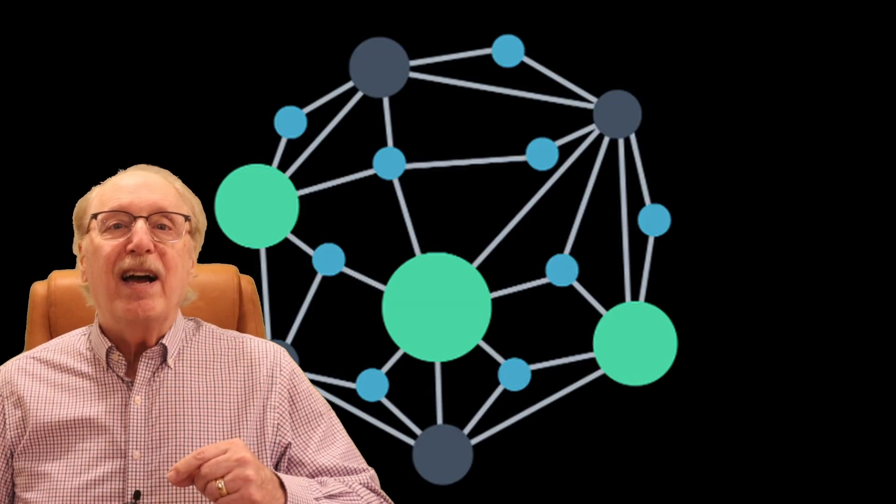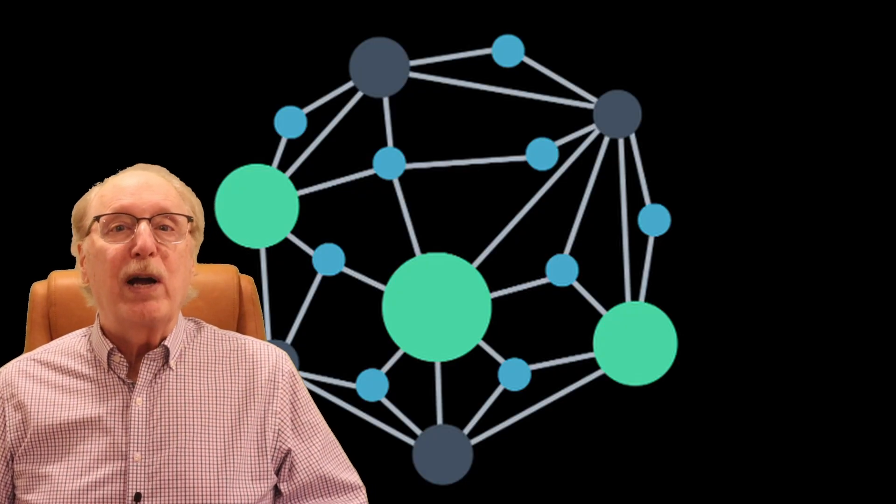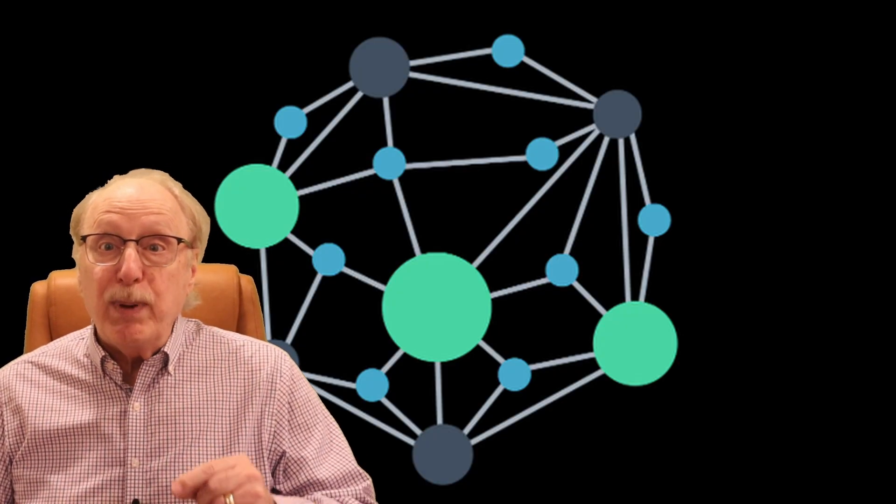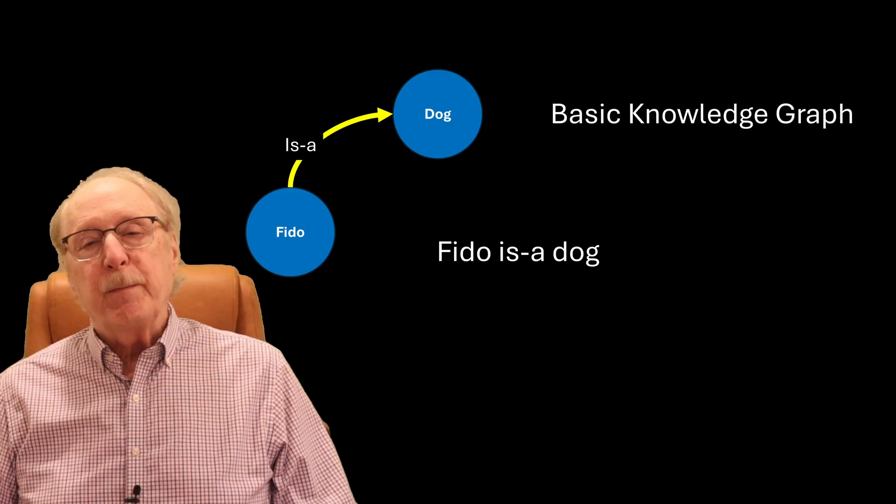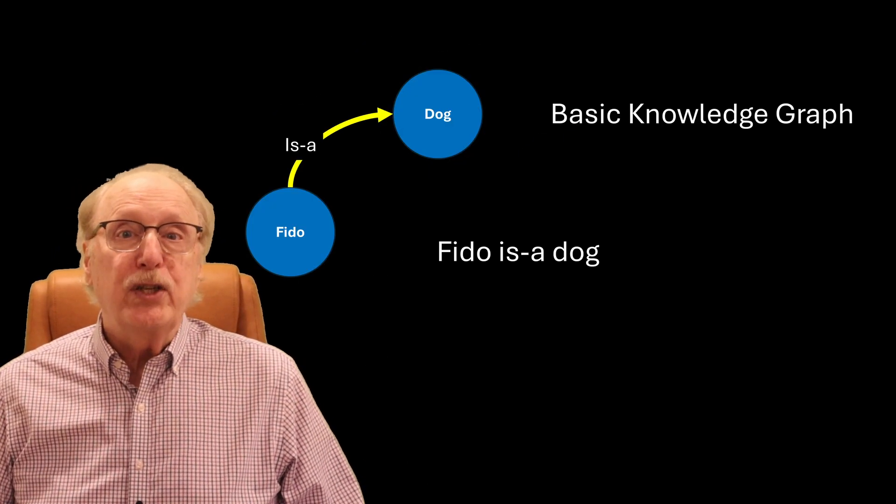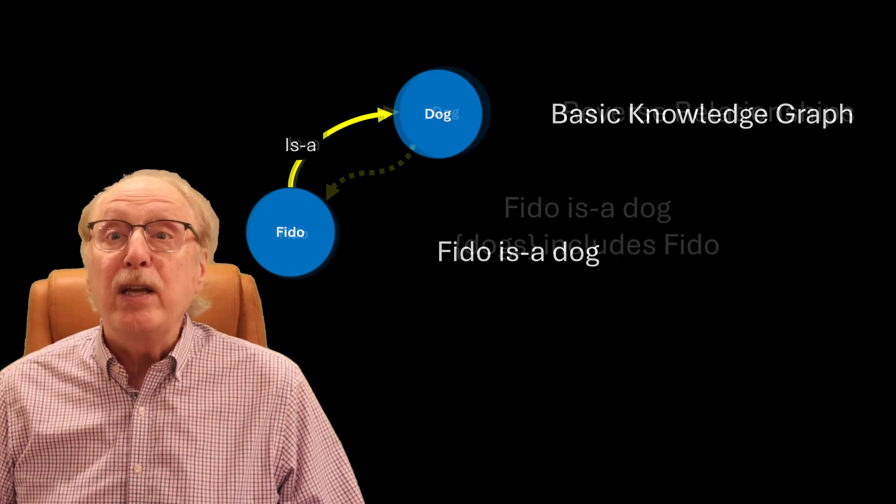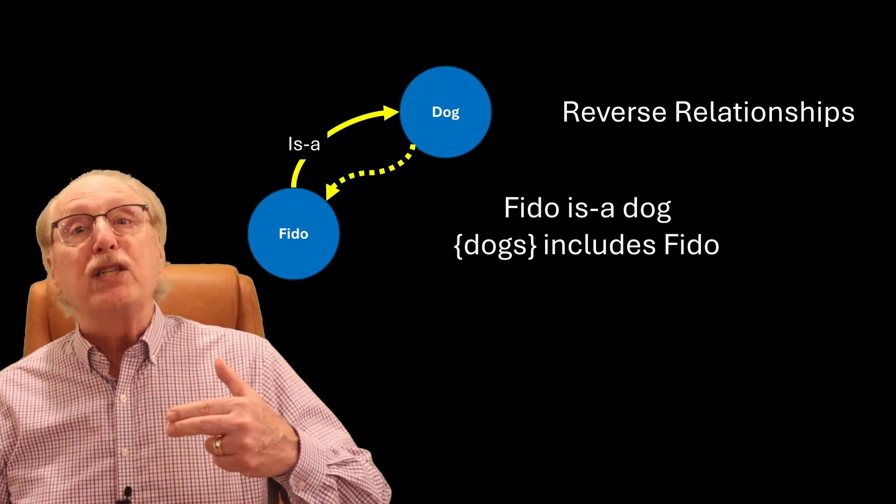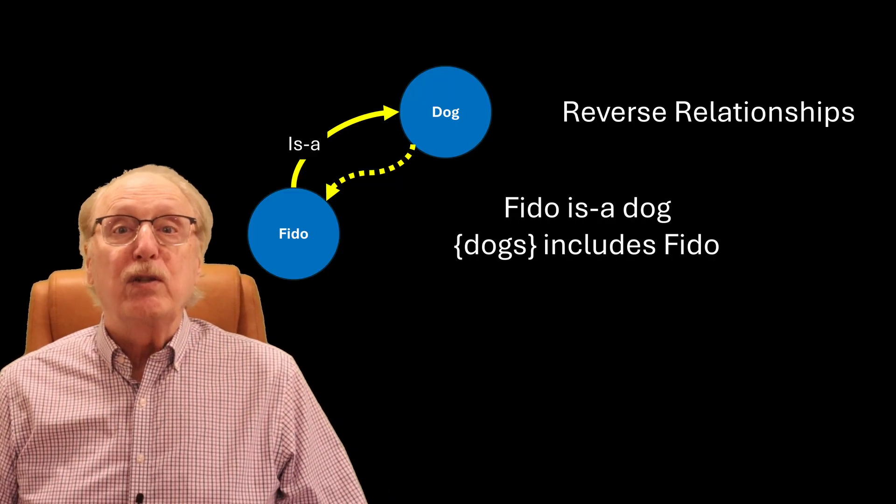In AI, knowledge graphs have been around for decades, but the graph in your brain adds powerful features. First, most relationships can be followed in either direction. If Fido is a dog, that also means the set of dogs includes Fido.